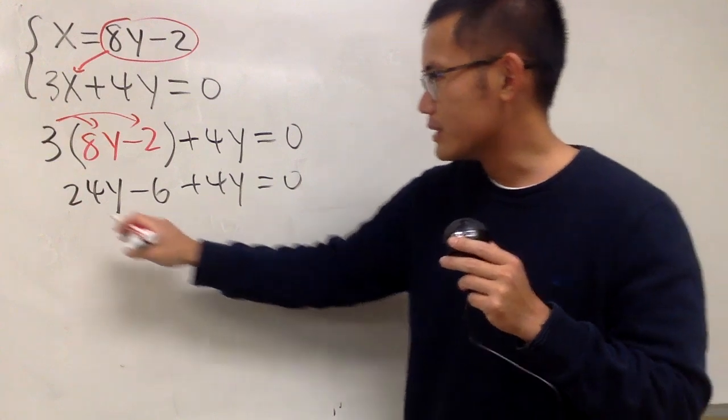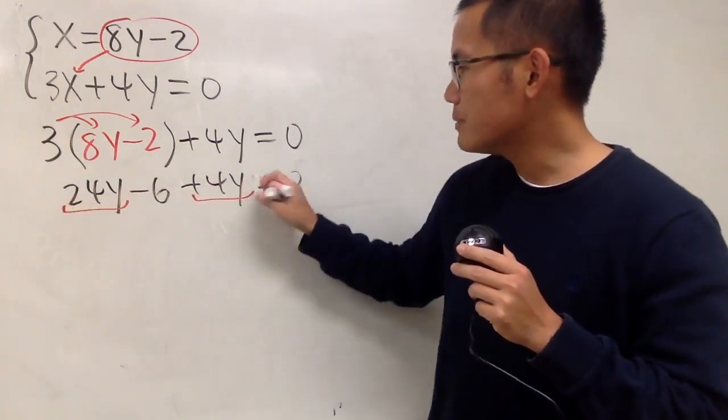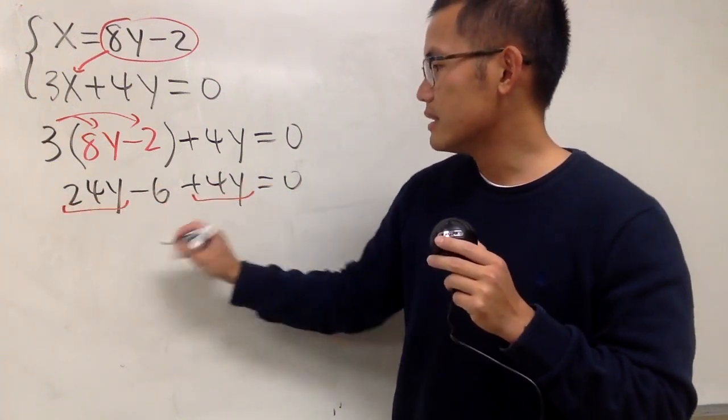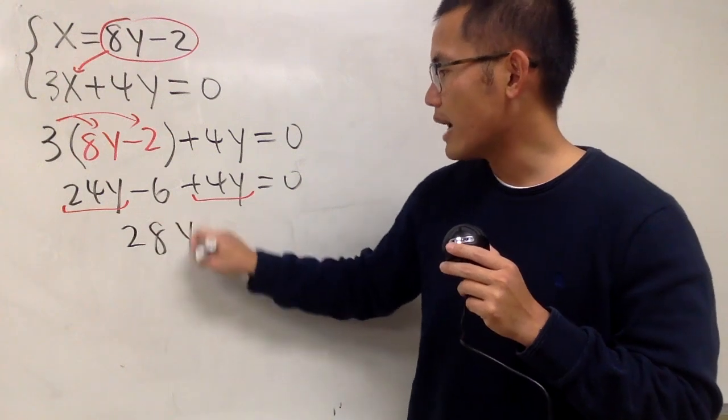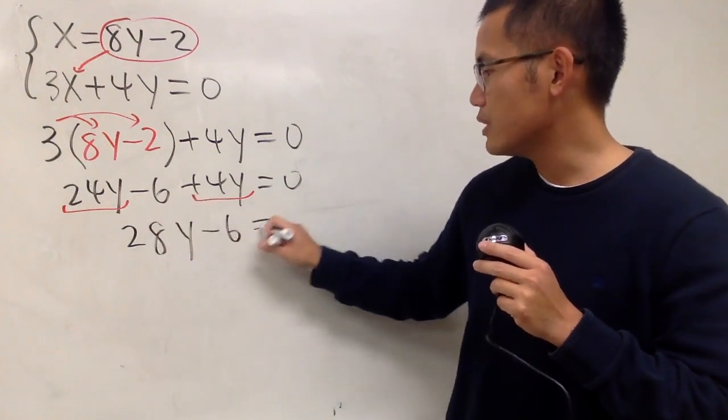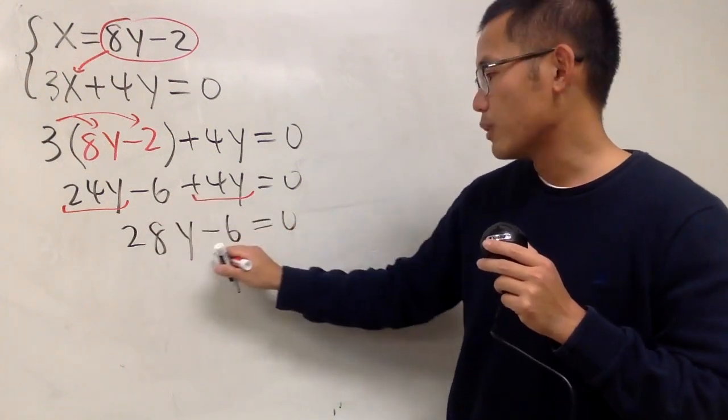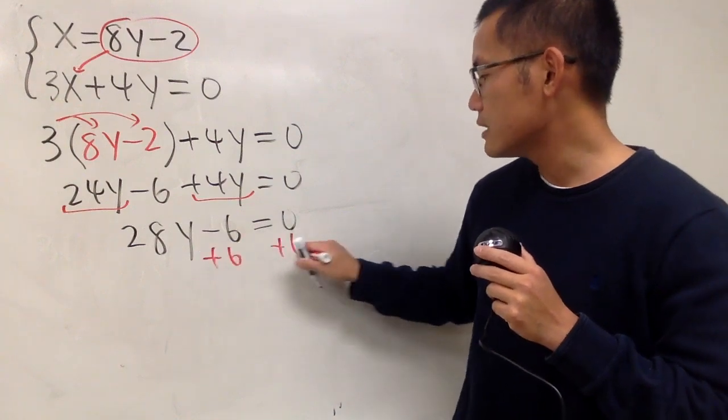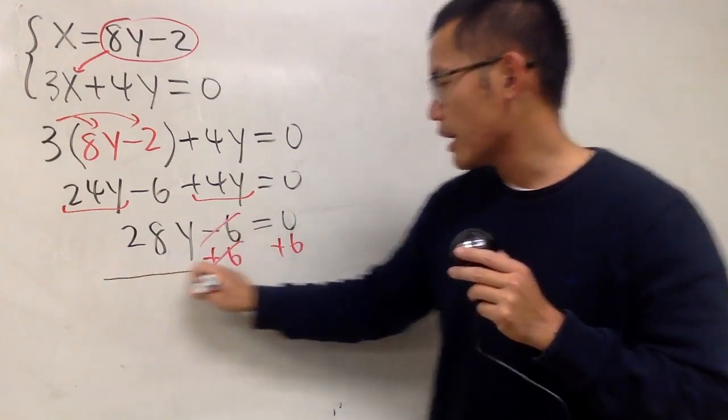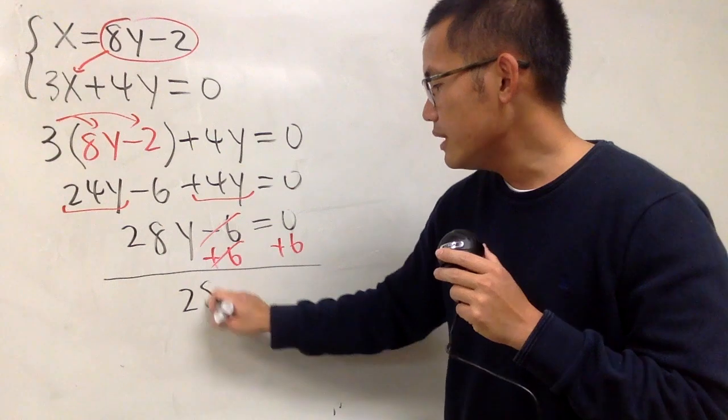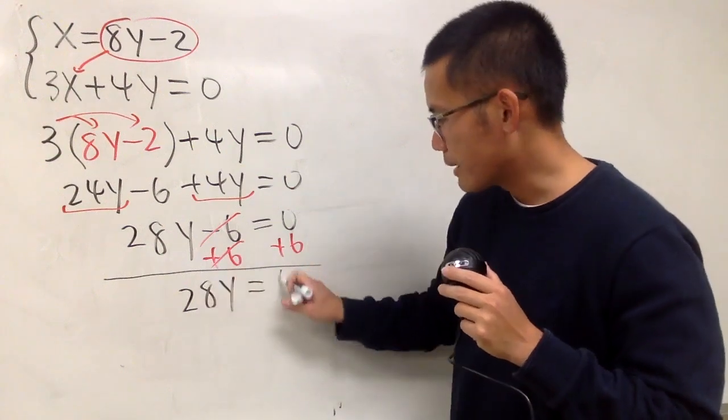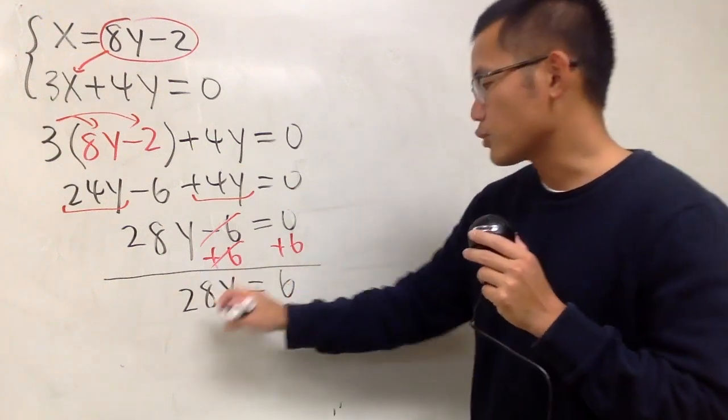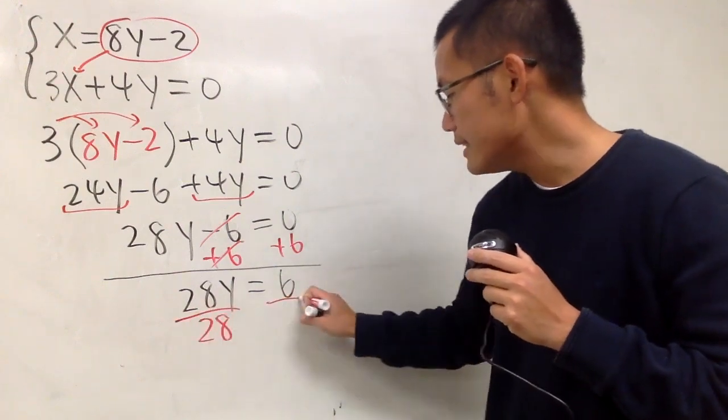Okay, to continue with this, combine like terms. And we see that this is 28y, and then the minus 6 is equal to 0. And I will just have to add a 6 on both sides, so that they cancel. And then, I will end up 28y equals positive 6. And this is 28 times y. So, divide both sides by 28.